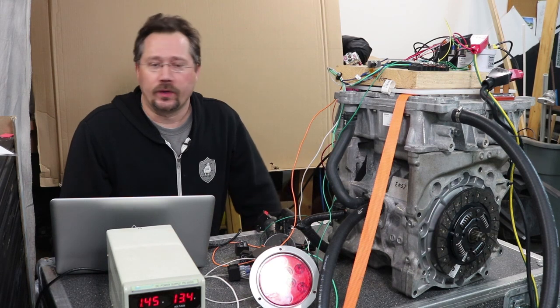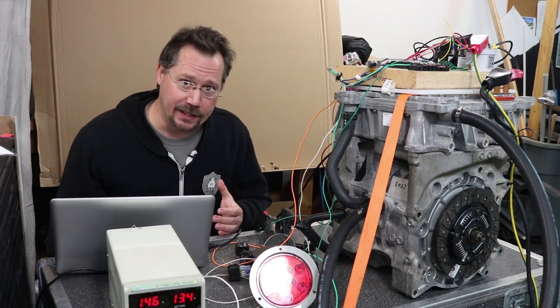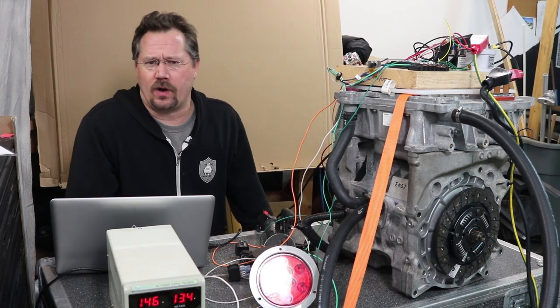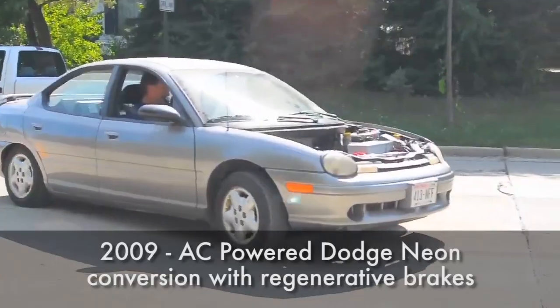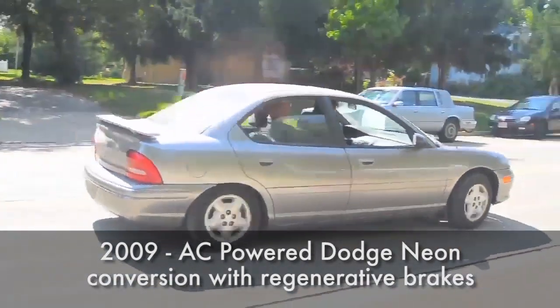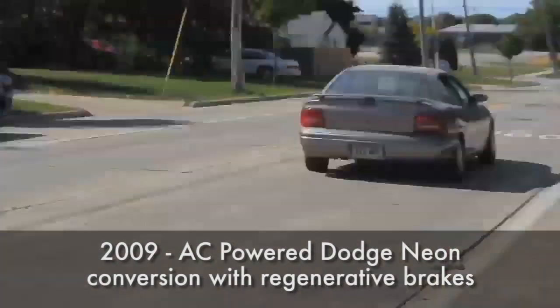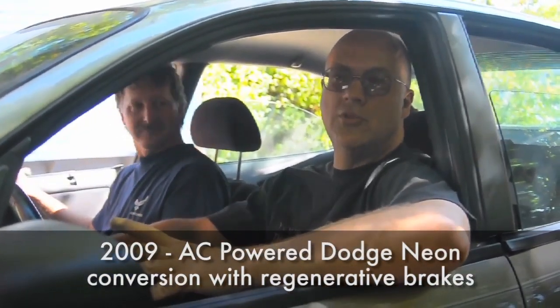One thing a person should consider when working with regenerative braking is the ability to turn on the brake lights. This is something we've been talking about for a long time. Years back when my friend Tom converted his Dodge Neon to an AC electric car, we were actually talking about it back at that time. He's a nerdy electrical engineer type and was thinking about some different ways of doing that.